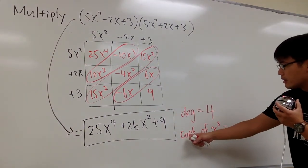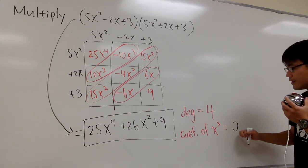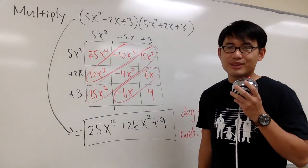Well, in this case, the coefficient of x to the third power, it will be 0. Because we have 0x³, because we didn't have x to the third power.